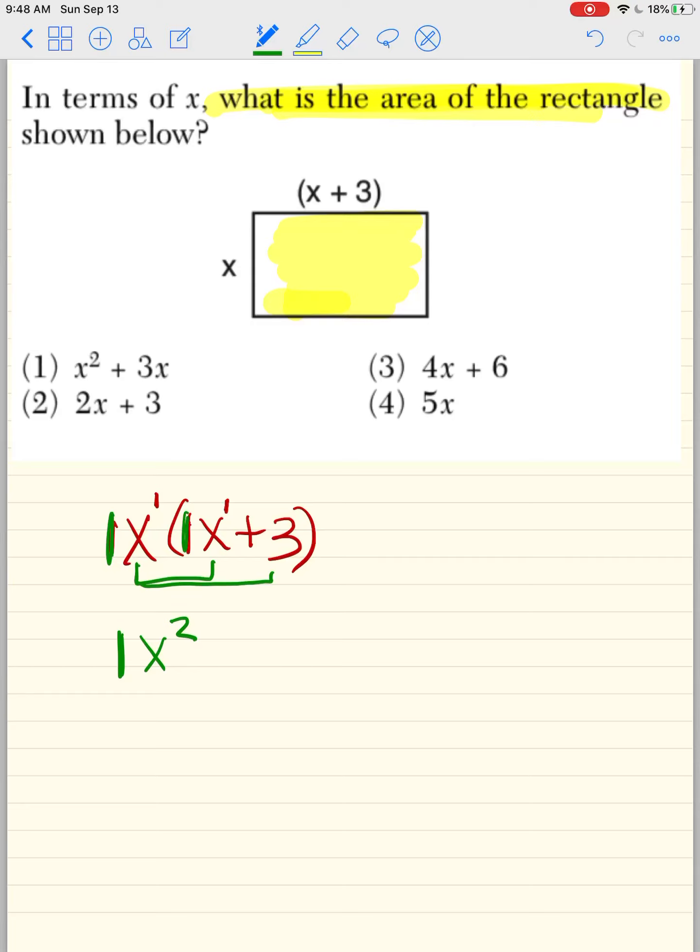And then x times a positive 3. Well, I don't care about the x and the 3. Remember, 1 times 3 is 3. And since there's no letter to multiply, we just bring it along for the ride. So we have x² + 3x.